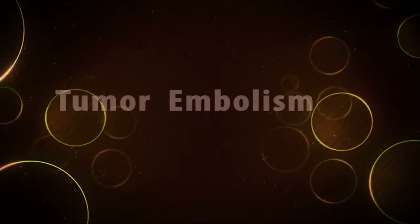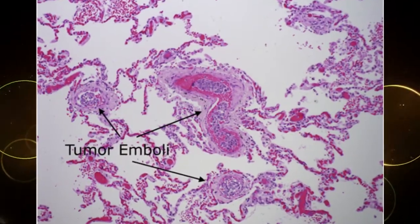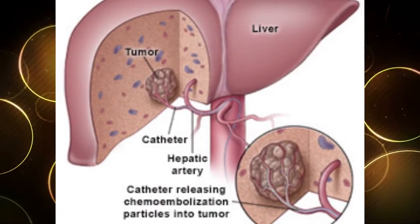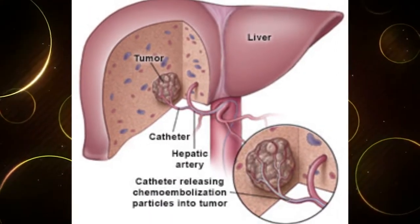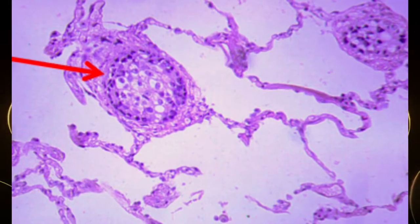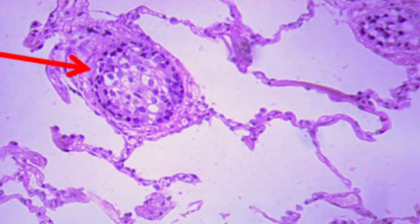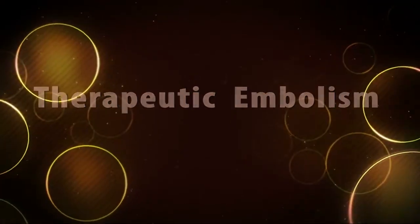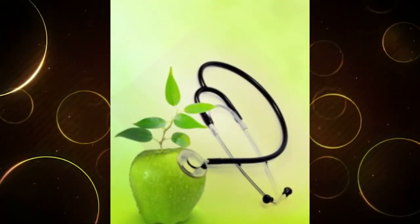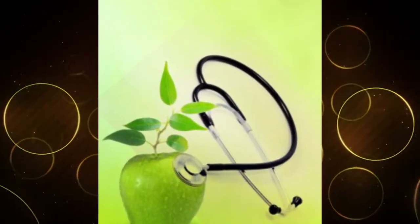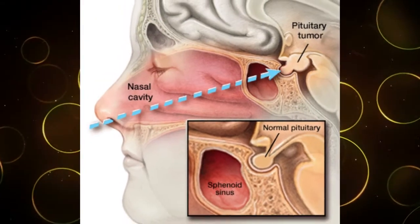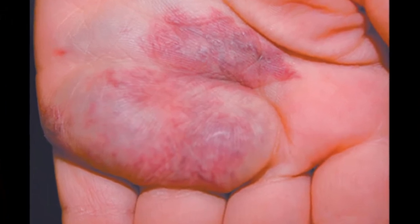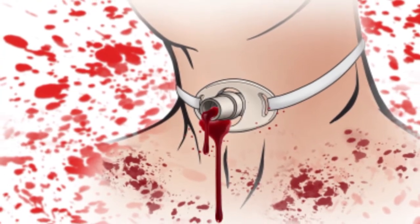In tumor embolism, malignant cells enter the circulation covered by a thrombus via veins or lymphatics. Tumor emboli can occur in patients with cancer and carry a risk for serious complications. Therapeutic embolism involves deliberately embolizing for treatment purposes, such as treatment for tumors, treatment for vascular malformation, and to seal a site of bleeding.